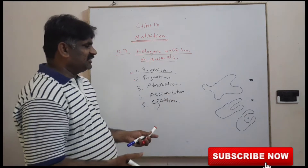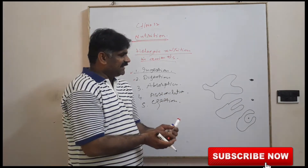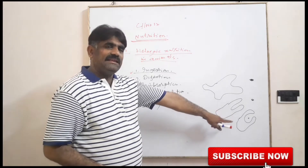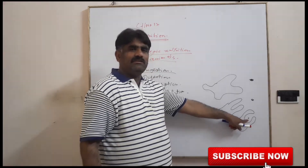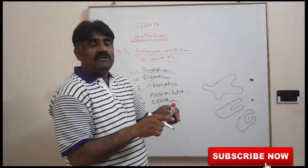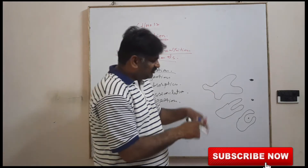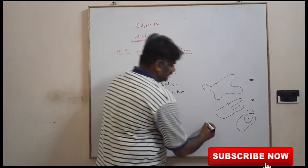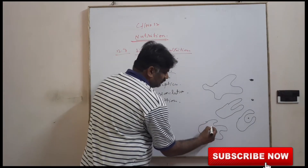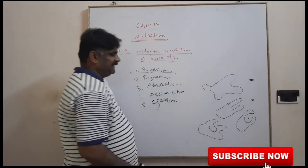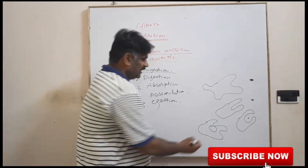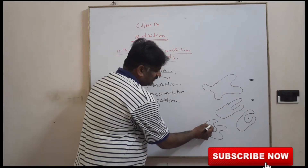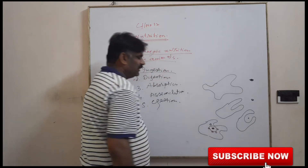The pseudopodia form a cup-like structure. This cup-like structure acts as a mouth, as in higher animals, and it is used for ingestion. Through this process, it engulfs the food particle. Now this food is changed or converted into a food vacuole. The food cup is changed into the food vacuole.